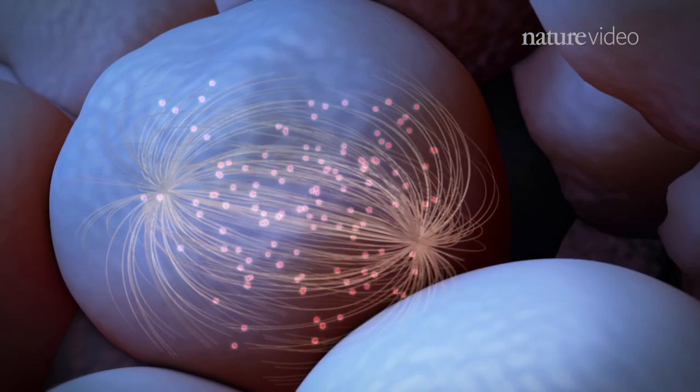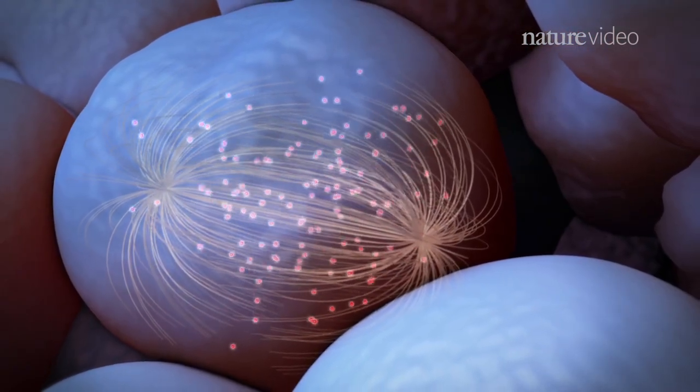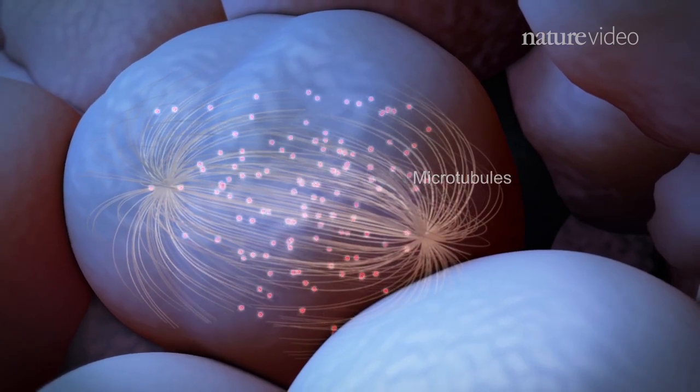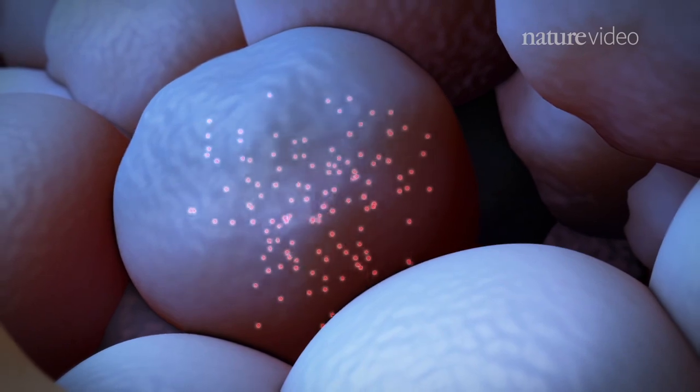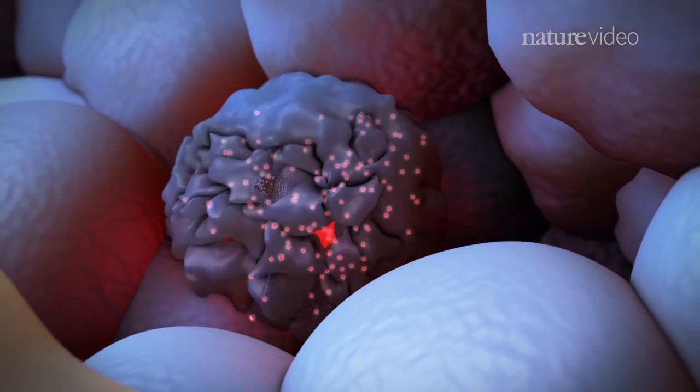One common mechanism to kill cells is to inhibit assembly of microtubules, which are essential for cell division. Tumor cells that cannot divide die by apoptosis.